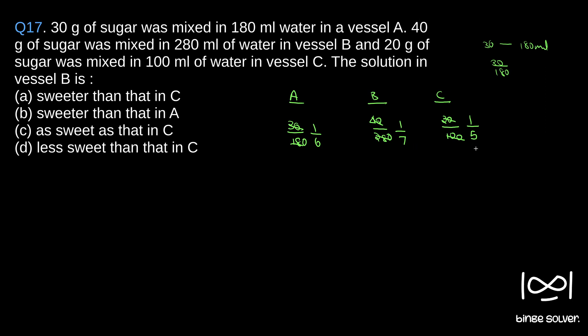We have 1 by 6, 1 by 7, and 1 by 5. Since 1 by 5, C is the sweetest. We are comparing B with the others. In the options, the solution in vessel B is sweeter than in C—that is wrong since per ml C has more sugar. 1 by 5 is a higher value compared to 1 by 7, so C is